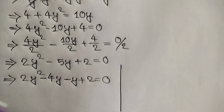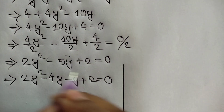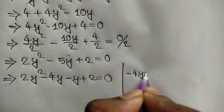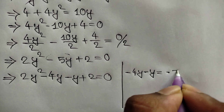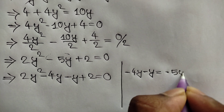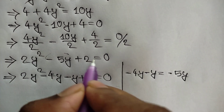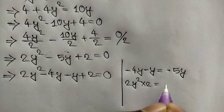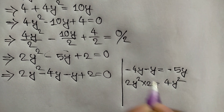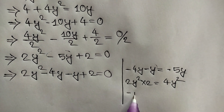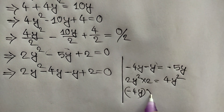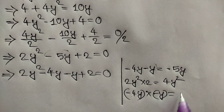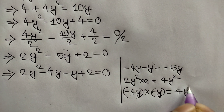Attention here: the negative 5y term is split as negative 4y minus y, since negative 4y minus y equals negative 5y. And 2y squared times 2 equals 4y squared, so we can write negative 4y and negative y, and negative 4y times negative y equals positive 4y squared.